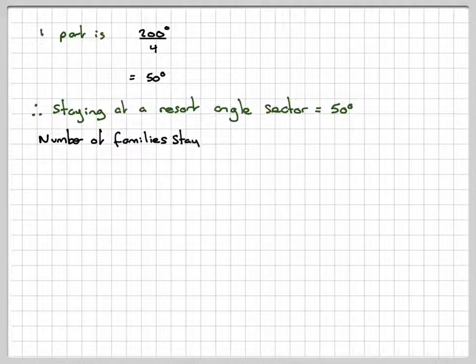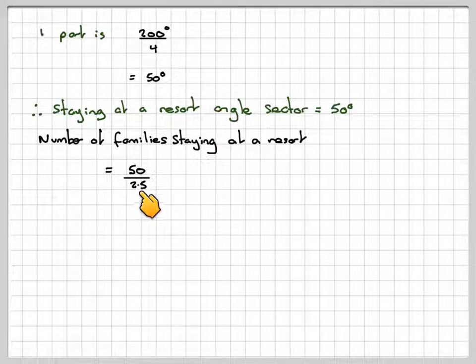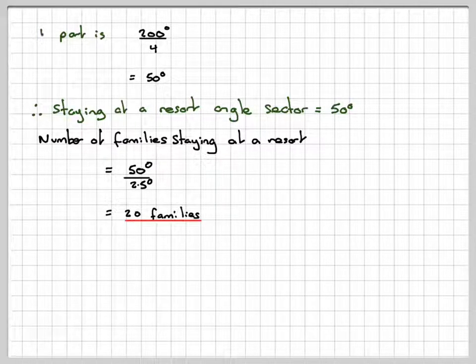The number of families staying at the resort will be 50 divided by 2.5, because each family is worth 2.5 degrees. So 50 degrees altogether is 20 families.